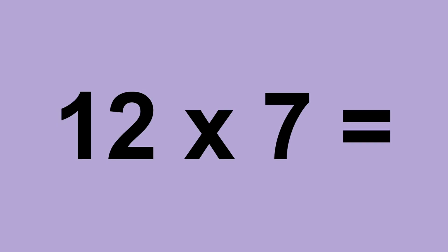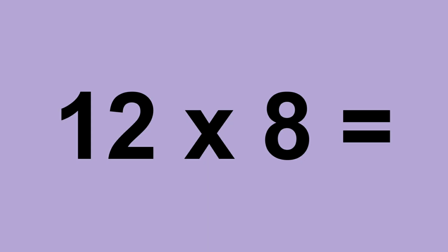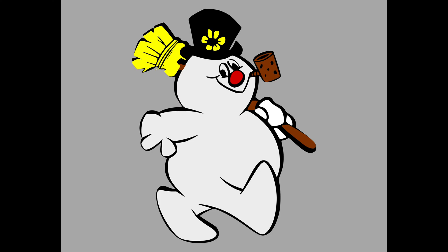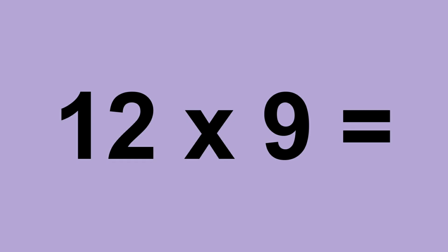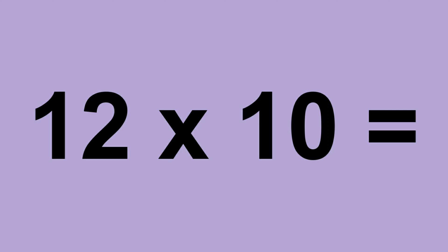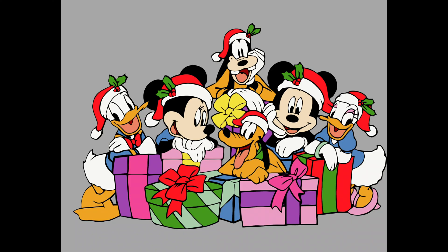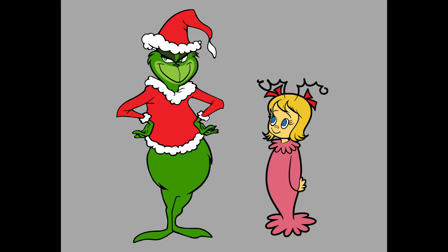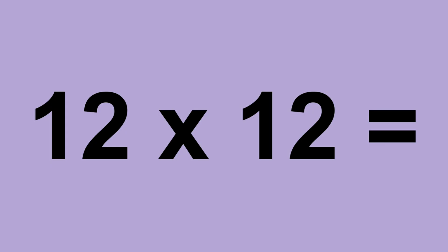Twelve times seven equals seventy-five. Twelve times seven equals eighty-four. Twelve times eight equals ninety-six. Twelve times nine equals one hundred and eight. Twelve times ten equals one hundred and twenty. Twelve times eleven equals one hundred and thirty-two. Twelve times twelve equals one hundred and forty-four.